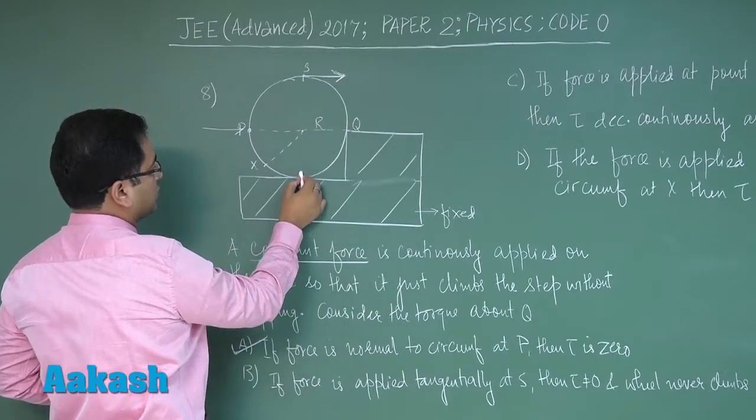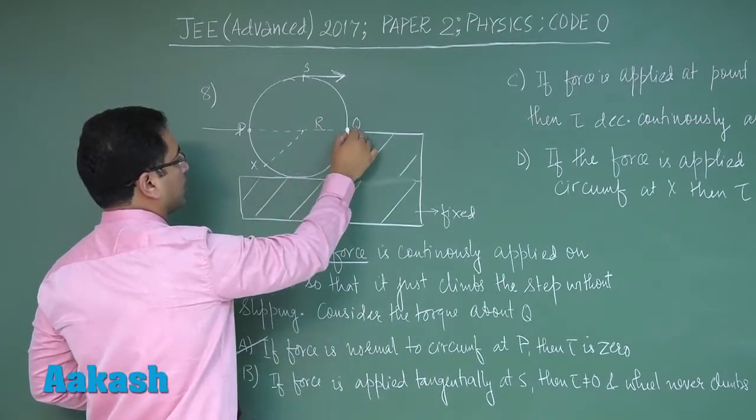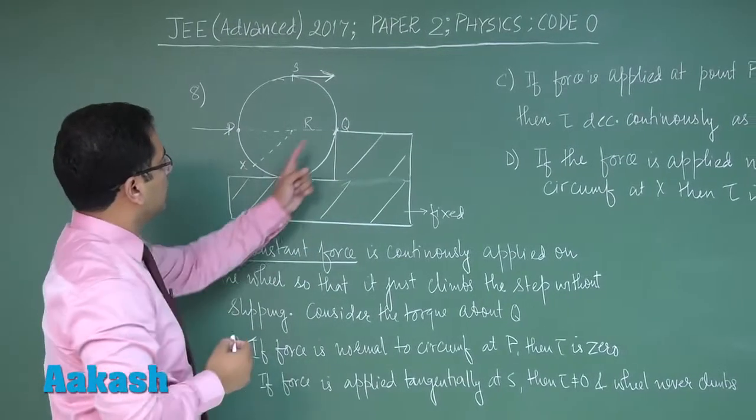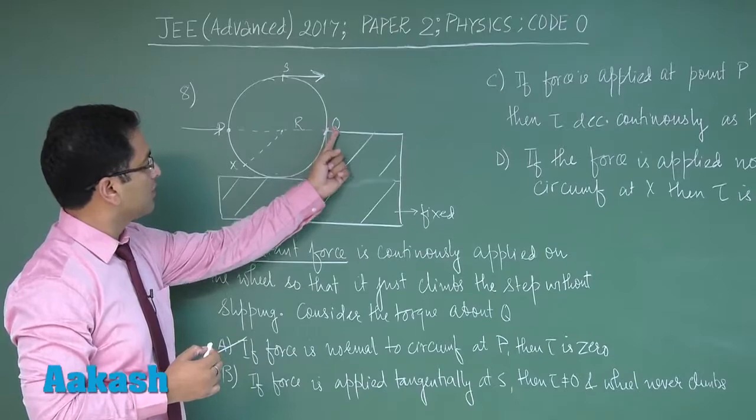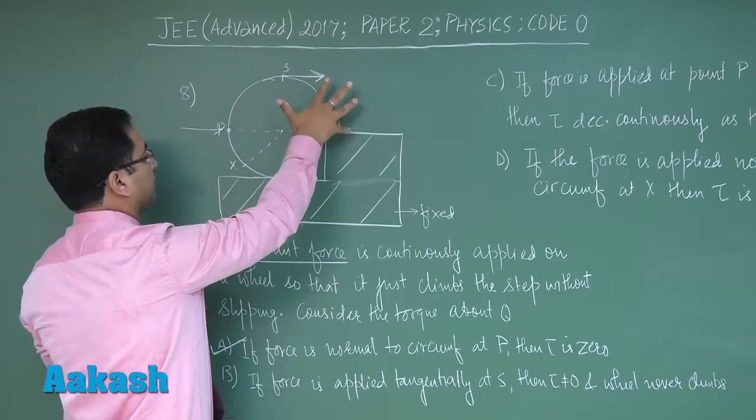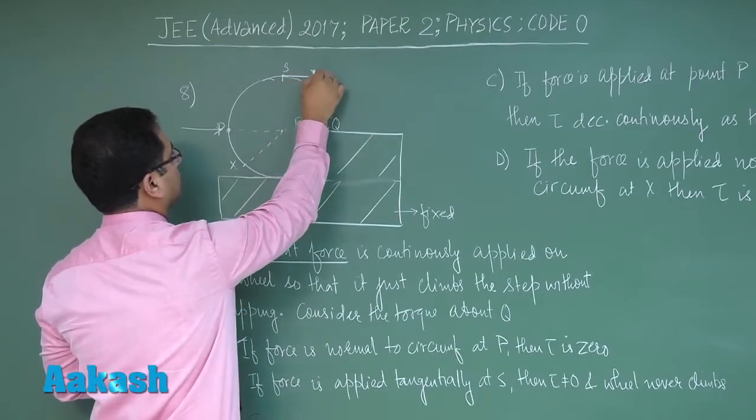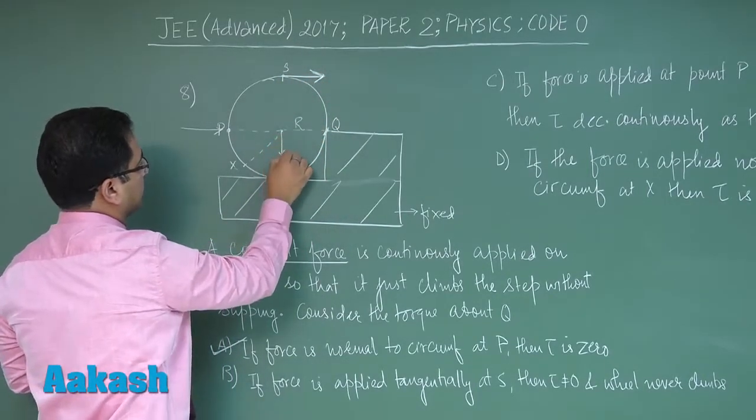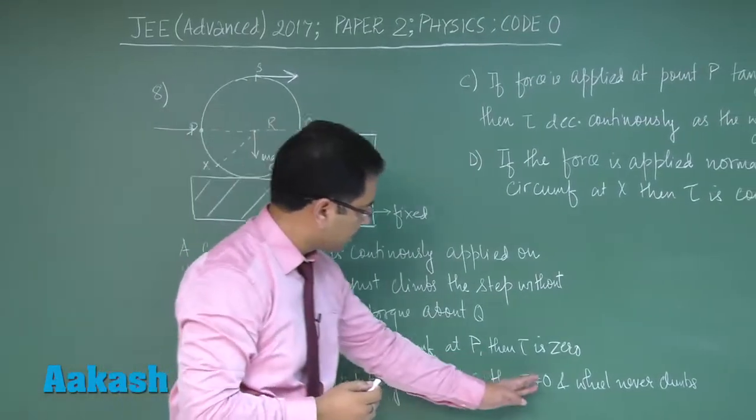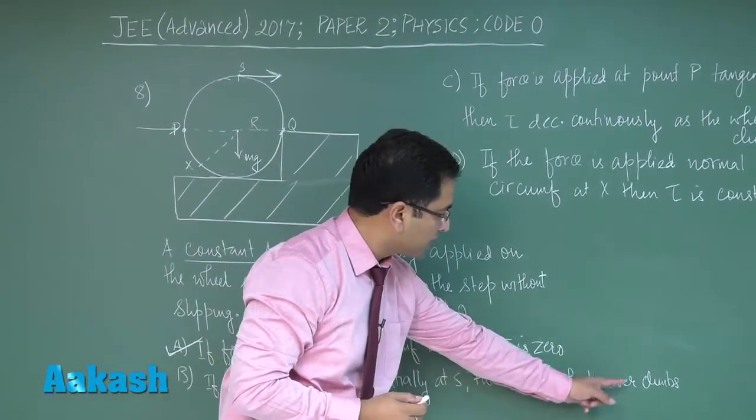Normal reaction and friction would be at this point. But the torque about Q due to normal reaction and friction would be zero. So the wheel can be lifted up, provided the torque due to the force would be greater than the torque due to mg about Q. So till this it was fine, but wheel never climbs, that makes the option incorrect.